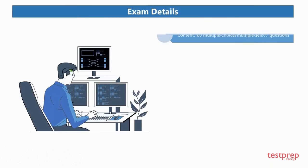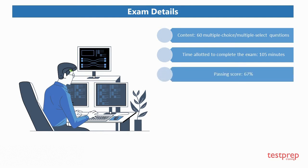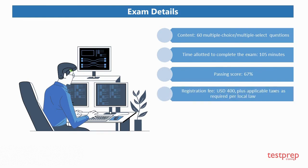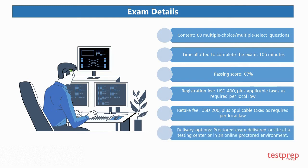Exam details: 1. Content will be 60 multiple choice or multiple select questions. 2. Time allotted to complete the exam is 105 minutes. 3. Passing score is 67%. 4. Registration fee is $400 plus applicable taxes as required per local law. 5. Retake fee is $200 plus applicable taxes as required per local law. 6. Delivery options are proctored exam delivered on-site at a testing center or in an online proctored environment.